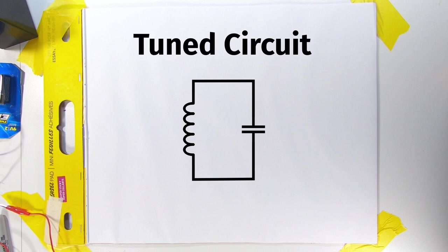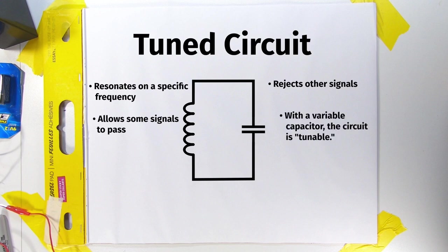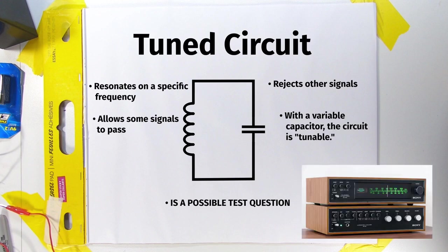And now, a word about a special circuit you might be asked about. A circuit with an inductor and a capacitor is called a tuned circuit. A tuned circuit resonates on a specific frequency, allowing some signals to be passed and others to be rejected. If a variable capacitor is used, that circuit is tunable, which is pretty important to radio, as you might know if you've ever used a stereo with a tuner in it.